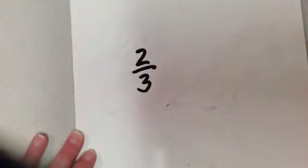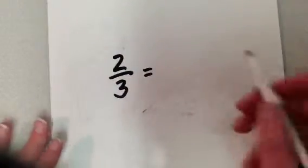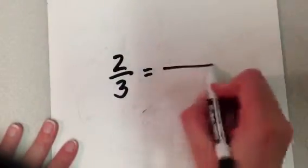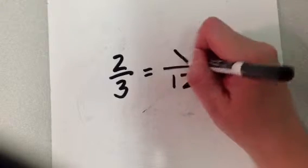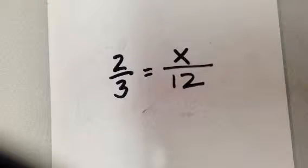I have the ratio 2 to 3, and I want to make it equivalent to something with a 12 kind of in the bottom of my fraction, right? The denominator of this fraction. What is this going to be? What is that x going to be? Well, what do I have to do first?